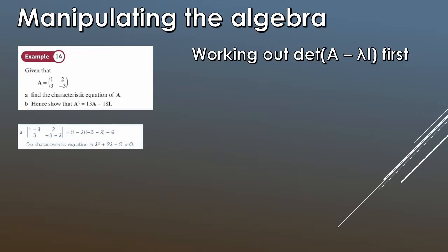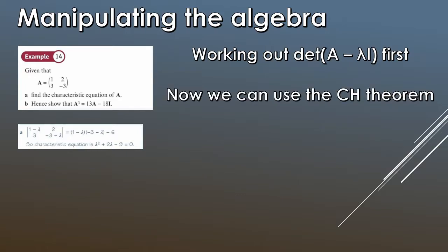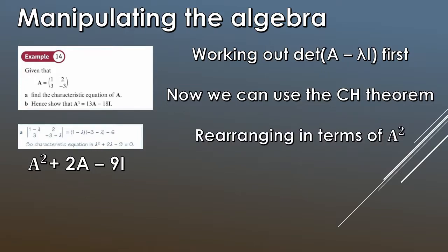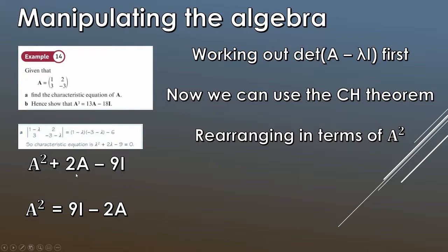Feel free to pause here and try to continue yourself. Applying the Cayley-Hamilton theorem, we replace lambda with A: lambda squared becomes A squared, 2 lambda becomes 2A, and the constant minus 9 becomes minus 9 times the identity matrix I. So A squared plus 2A minus 9I equals zero. We then rearrange to isolate A squared: A squared equals 9I minus 2A.